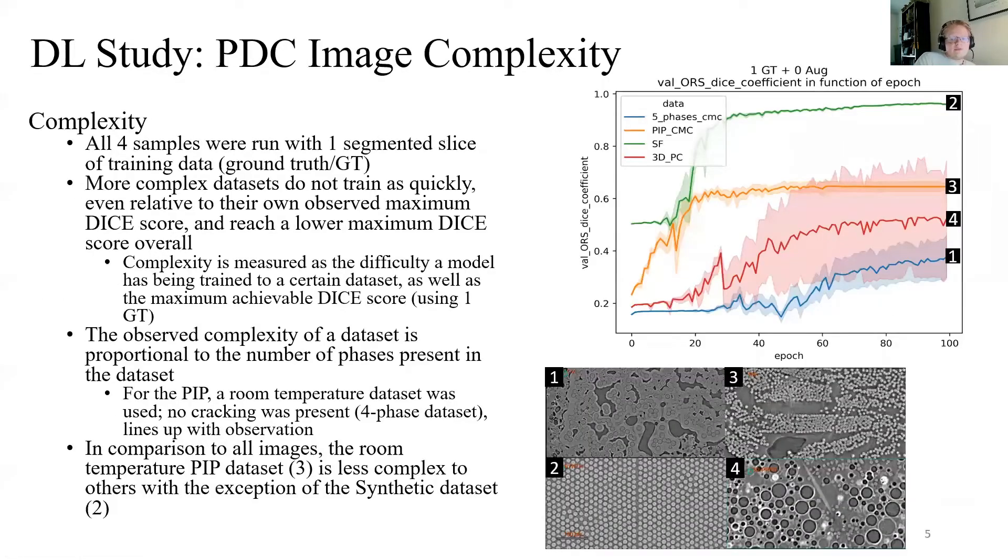We trained a different model for each PDC off one segmented slice of training data. This is also referred to as ground truth or GT in the following figures and found that more complex datasets do not train as quickly even when compared to their own maximum achievable dice score and that they also reach a lower dice score overall when compared to other less complex PDC datasets. How complex a dataset is viewed by the AI seems proportional to the number of phases present within the sample and the uniformity of those phases.